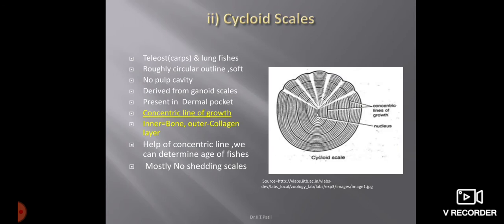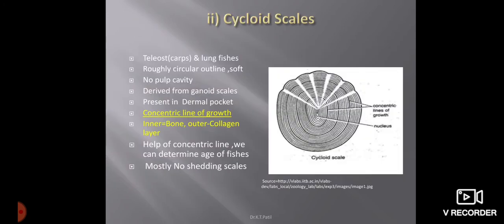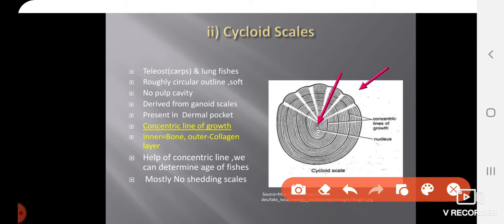One important note: Placoid scales are not overlapping and they do not grow — as the shark enlarges, new scales are added to the skin. Now, Cycloid scale is another type. It is a characteristic of carps and lungfishes. Its outline is roughly circular. The outer area is soft and made of collagen-like material, while the inner area is hard and made of bone-like material.